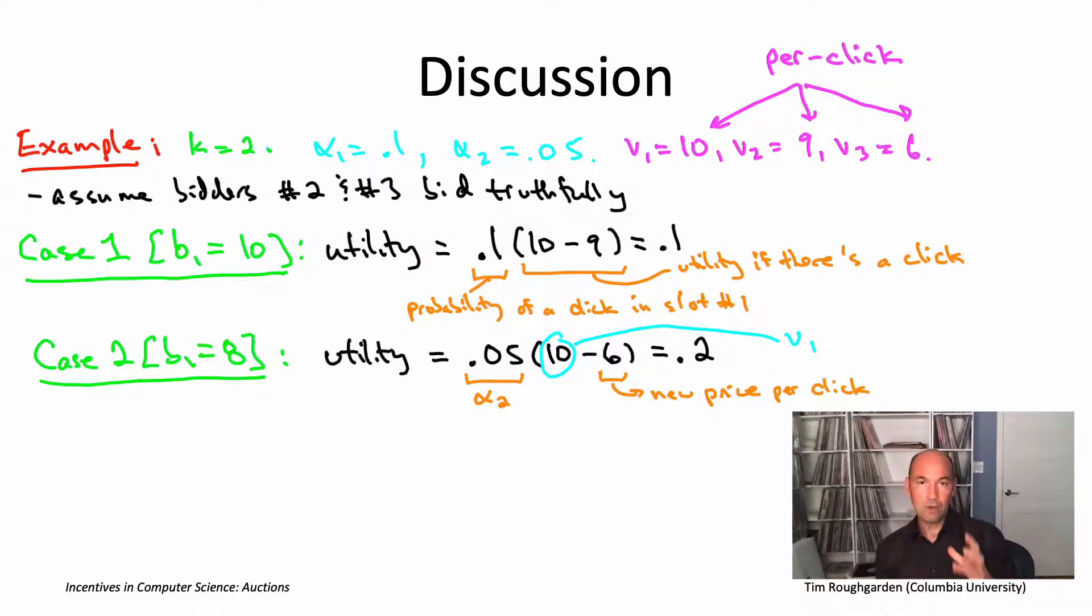Given that we're using the true valuation 10, now all of a sudden it's getting a net utility of 4 every time it gets a click. Now it only gets a click 5% of the time, but still you wind up with a utility of 0.2. And so because this non-truthful bid of 8 gives the bidder more utility than the truthful bid of 10, that proves that a generalized second price auction is not a truthful auction. It does not have that very strong property that we saw was enjoyed by the Vickrey auction in the single item case.